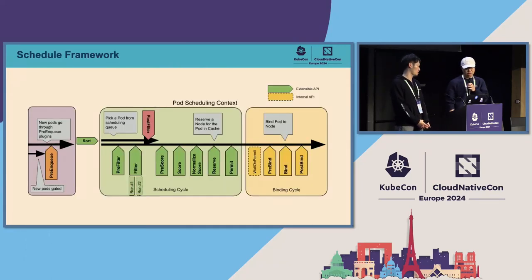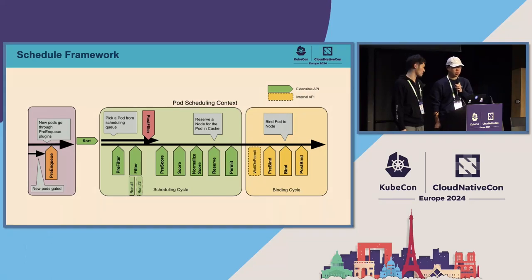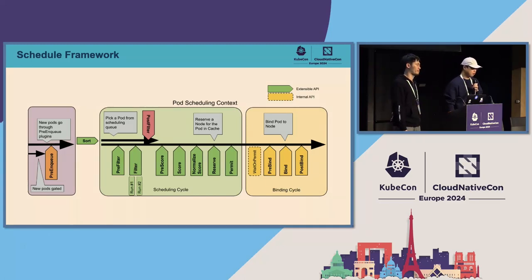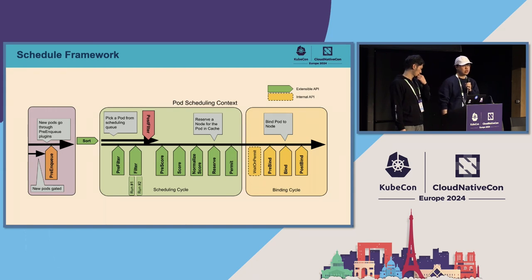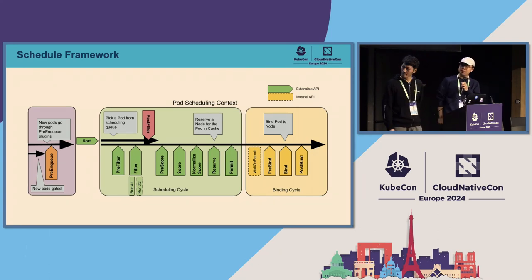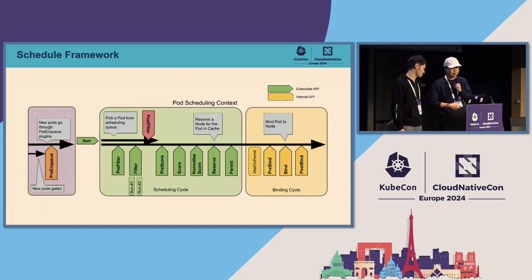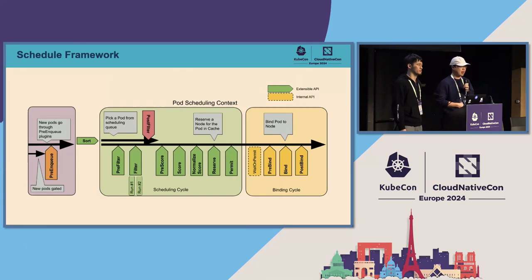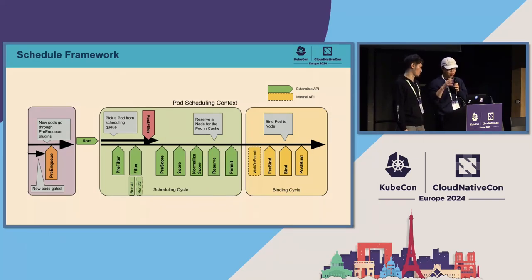First part is Scheduling Overview. The Scheduler, since 1.19, first introduced the scheduling framework to orchestrate the whole scheduling workflow. All the plugins shipped with the default Kubernetes offering are using this framework, and a lot of out-of-tree plugins developed to satisfy in-house scheduling requirements are also using this framework. We start with a sorting interface — internally we maintain a scheduling queue for incoming pods, sorted by pod priority. The scheduler picks the head of the queue and enters the scheduling cycle.